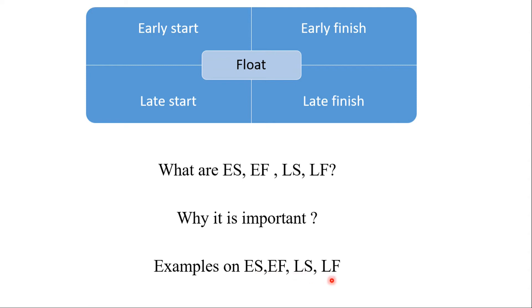In a previous video we saw how to calculate float. Float is the amount of time in which an activity can be delayed without affecting the project deadline. We calculated float using critical paths. There is also a shorter way to calculate float: if you know the earliest start, earliest finish, latest start, and latest finish times, you can calculate float easily.